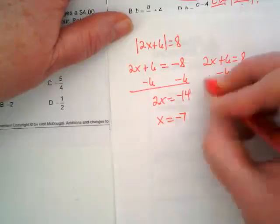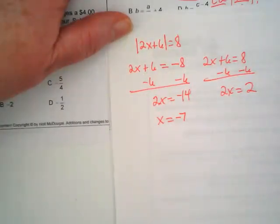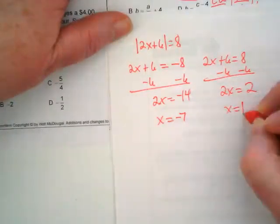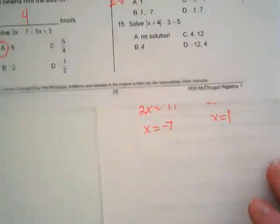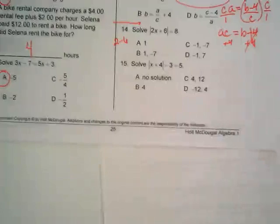I do the same action on this side and I get 2x equals 2. 2 divided by 2 is 1, so I get x equals 1. I'm going to go back and look at my multiple choice options. Negative 7, positive 1 is B.